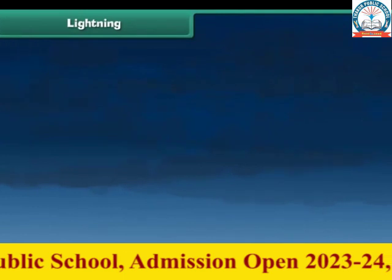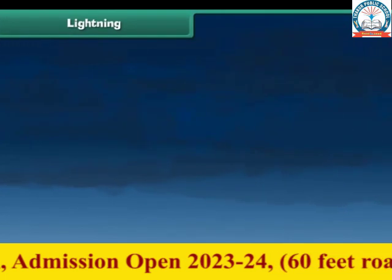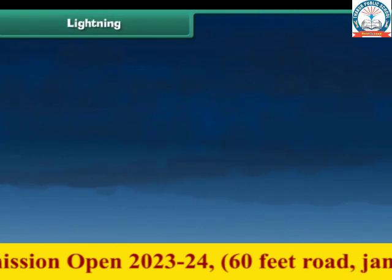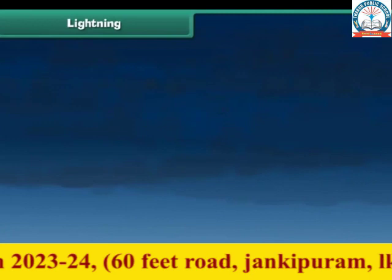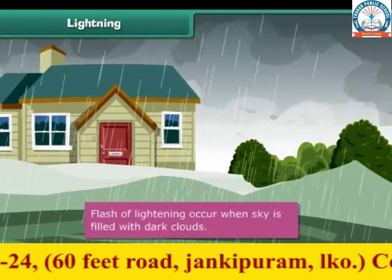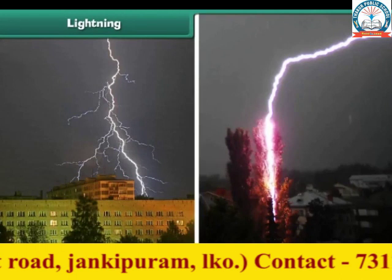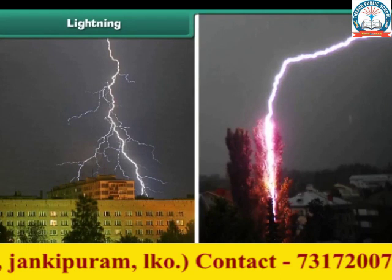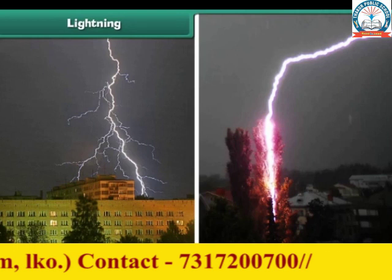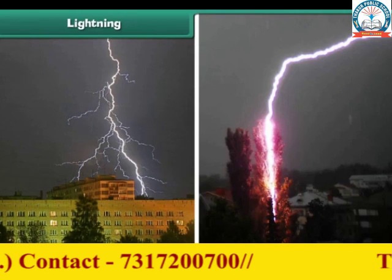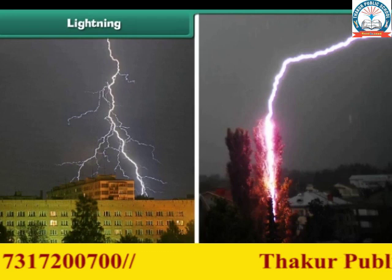Lightning is also a natural disaster. During the rainy season, when the sky is filled with dark clouds, we see flashes of lightning. The lightning may strike buildings, trees, or a field. When lightning strikes, everything at that place burns. Sometimes animals and even people die due to lightning.